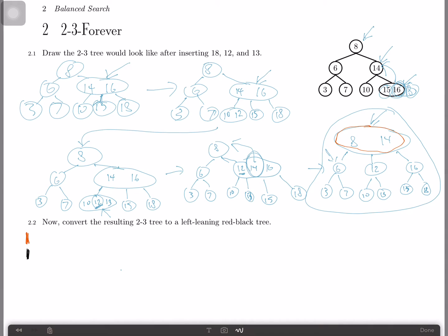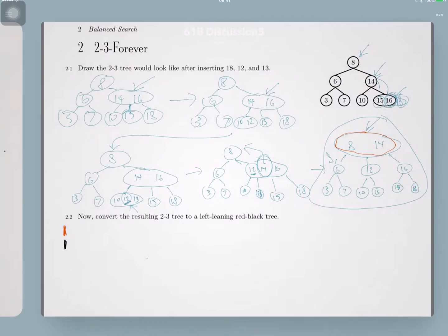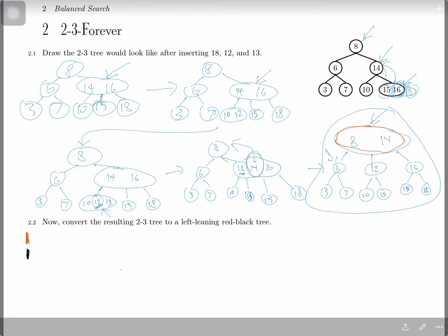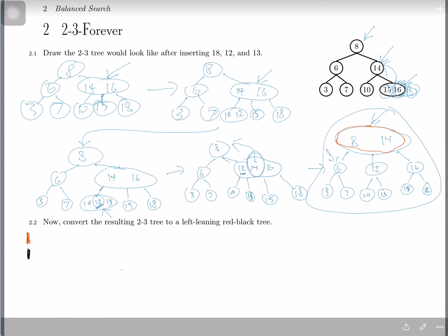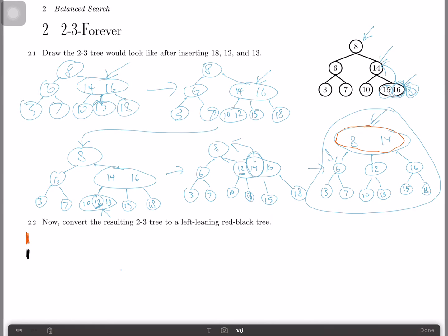So what we can do is convert this 2-3 tree into a left-leaning red-black tree as follows. For left-leaning red-black trees, they're called left-leaning because the red links are always on the left. And we can enforce that by always just taking the bigger node. So whenever we have a 2-3 tree node with two items in it, we always just say the smaller item is always going to be the left branch or the left child of the bigger items. So we can see that here: 14 and then this becomes eight.